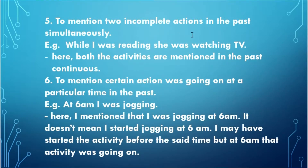Next use: to mention two incomplete actions happening simultaneously in the past. Till now we have seen two actions in a sentence where one was in past continuous and the other in simple past. But here we talk about two long continuous actions in the past happening at the same time. Look at the example: 'While I was reading, she was watching TV.' Both actions are in past continuous — was reading, was watching. The combining word here is 'while'.